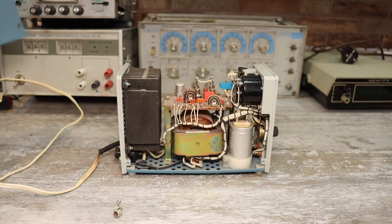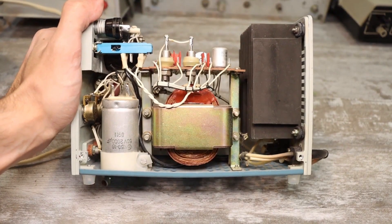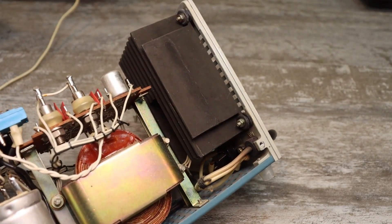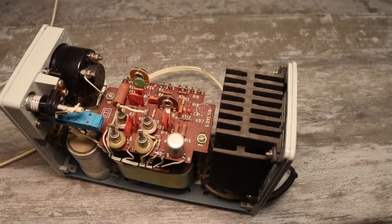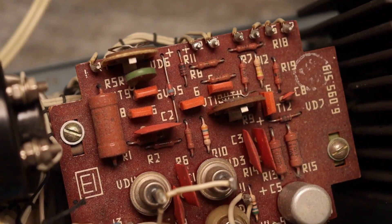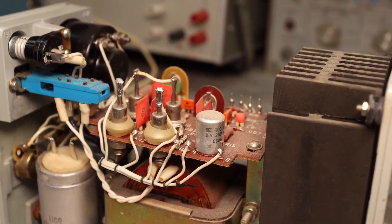Inside everything is very neat. At the bottom there's a fairly large iron transformer for 15 watts, and at the back there's a heat sink with a power transistor. On top there's a control board. There are no microchips here. Everything is assembled on transistors. The printed circuit board is small in size, made of textolite.